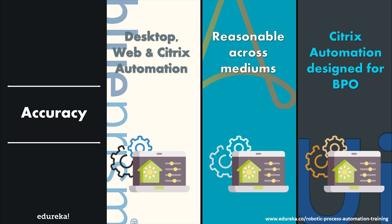Moving on to accuracy — how accurately the designed automation delivers desired results within allotted production time. Blue Prism performs well in desktop, web, and Citrix automation. Desktop automation refers to activities in a single PC, web automation to actions in a browser, and Citrix automation to actions in a virtual environment. UI Path shines specifically in Citrix automation designed for business process outsourcing, while Automation Anywhere performs reasonably well across all mediums.